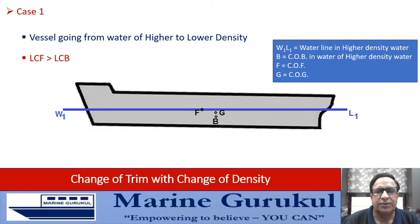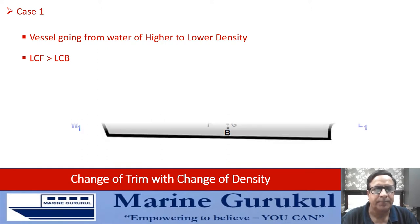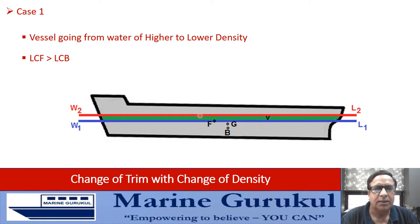When this vessel goes to lower density, she will experience sinkage and her draft will increase, because the reduction in density must be compensated by an increase in volume of displacement so that their product — giving the displacement — remains the same. The vessel sinks to a new waterline W2L2. There is an additional volume which gets immersed, represented by the green volume, small v.